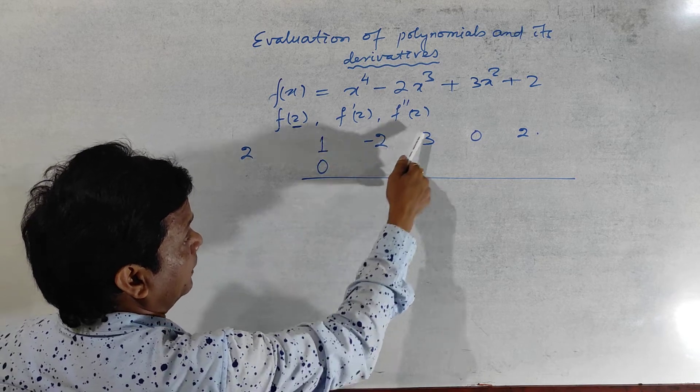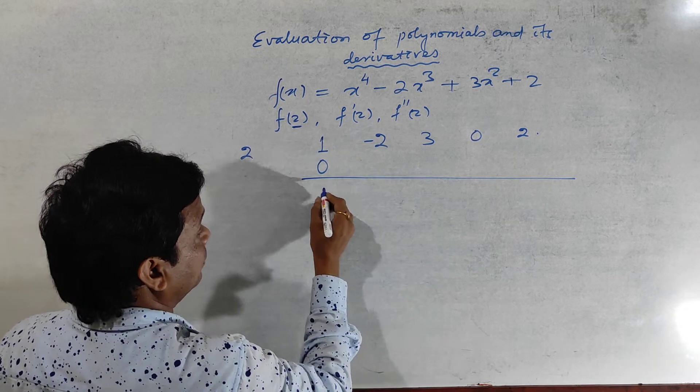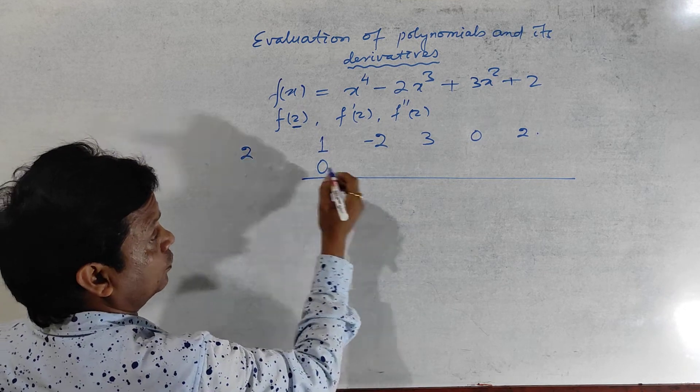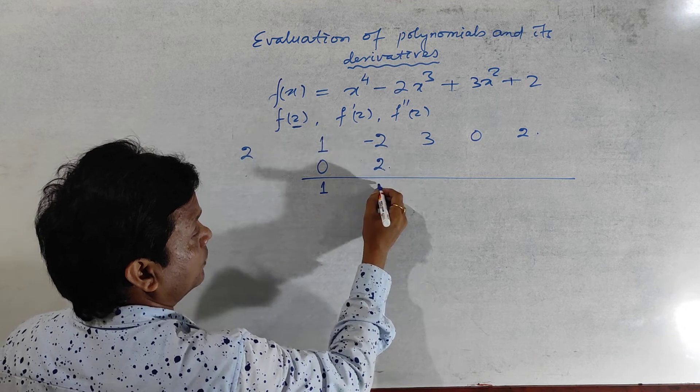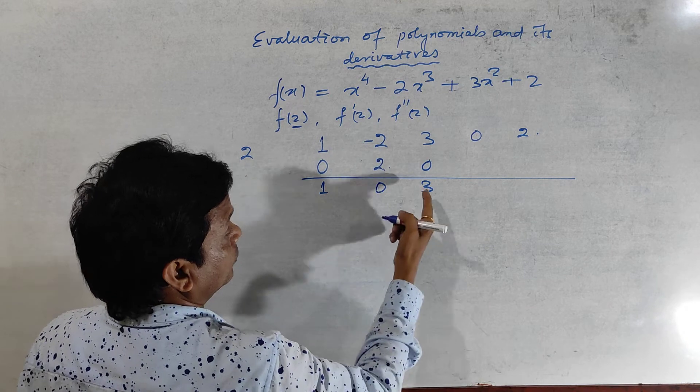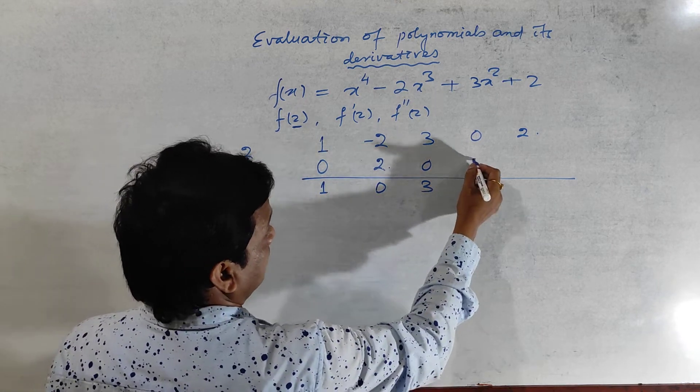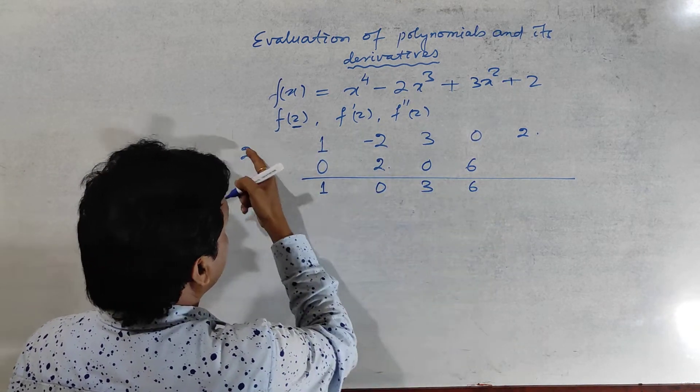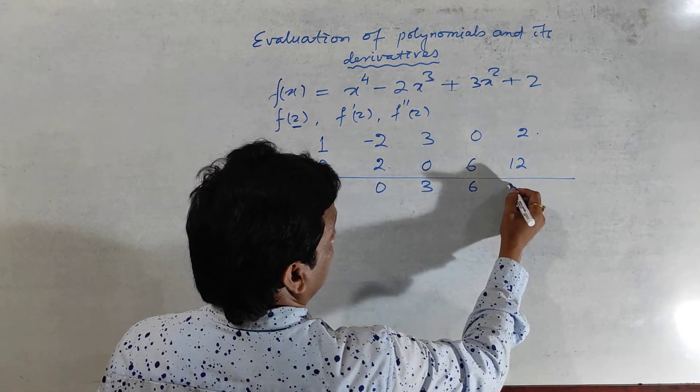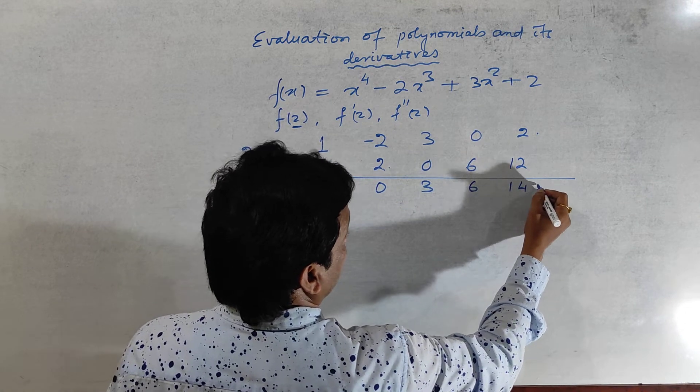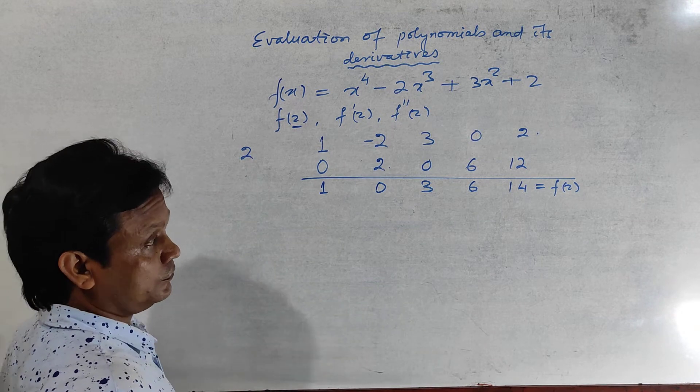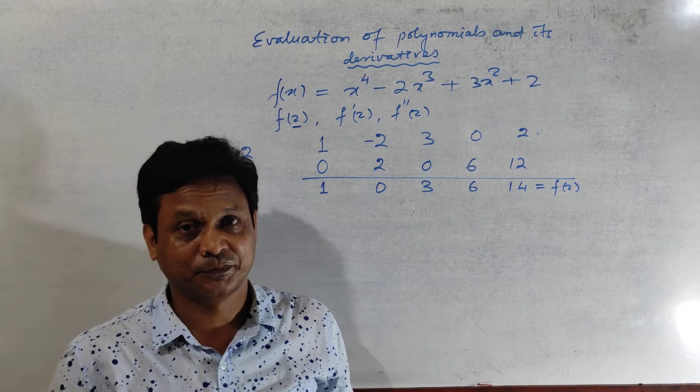So 1 plus 0, you should add these two, always you should add. 1 plus 0 is 1, then multiply this one with 2, 1 into 2 is 2, write here. So sum of these two is 0, so 0 into 2 is 0, so it will become 3. So 3 into 2, it is 6, write 6 here. So this sum will be 6, so 6 into 2 it is 12. So it will be 12 plus 2, it is 14. So this is f of 2. This is the value of f of 2.